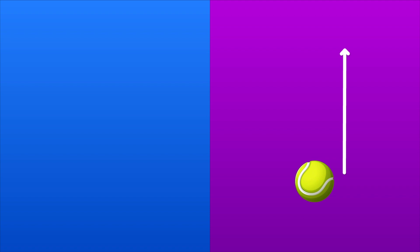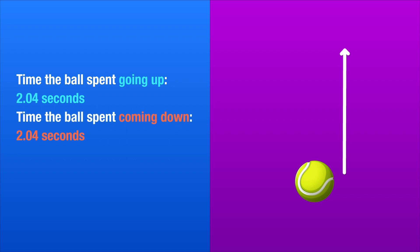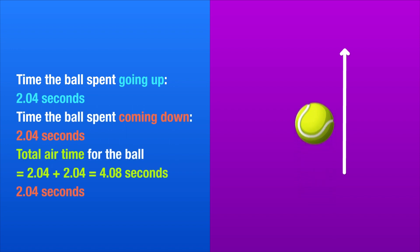In our example, however, the ball is traveling the same distance going up as it is coming down, and that's why the time is also the same. The air time for the ball was 2.04 seconds on the way up and 2.04 seconds on the way down, for a total of 4.08 seconds.